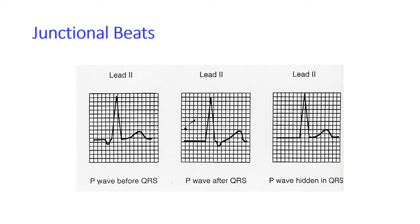When beats originate in the junction, the timing of depolarization determines what the beat will look like. If the impulse depolarizes the atria before it depolarizes the ventricles, you will see an inverted P wave before the QRS. Normally, the PR interval will be very short — 0.10 seconds or less. The QRS will be normal because the impulse originated in the atrium and travels down the bundles of His, creating a normal QRS.